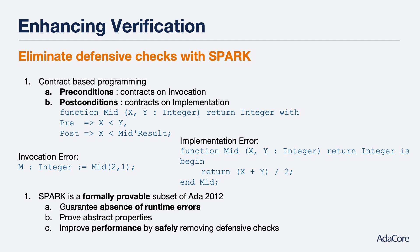Design by contract is a great programming practice in general, but Ada takes this one step further with Spark, a formally provable subset of the Ada 2012 language that is fit for sound static analysis and formal method techniques. In the book, you will find examples of how formal proof techniques can guarantee an absence of runtime errors, prove abstract properties often useful in certification contexts, and make your code more performant by letting you safely remove defensive code entirely.